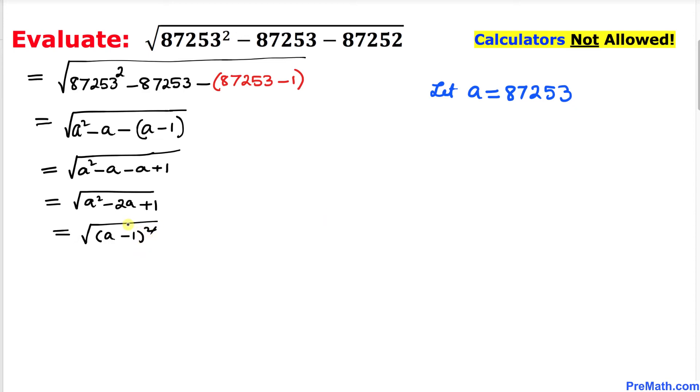Now we can see this square and square root—they undo each other—so we simply ended up with a minus 1. However, our a value is 87253. Let's go ahead and replace that one: 87253 take away 1, so that is going to give us 87252. And that's our simplified answer.